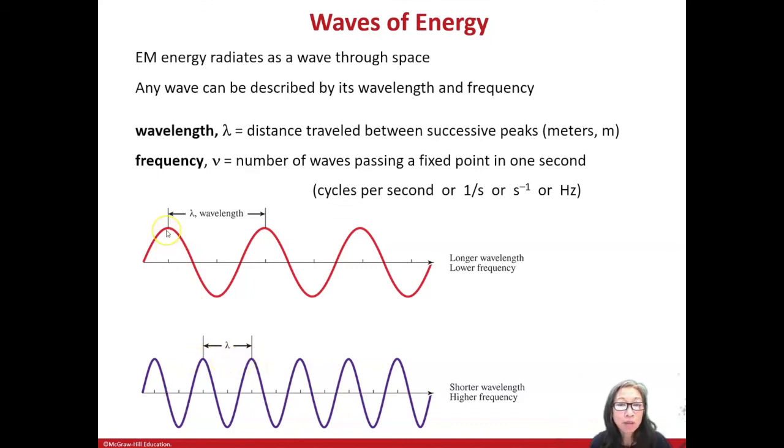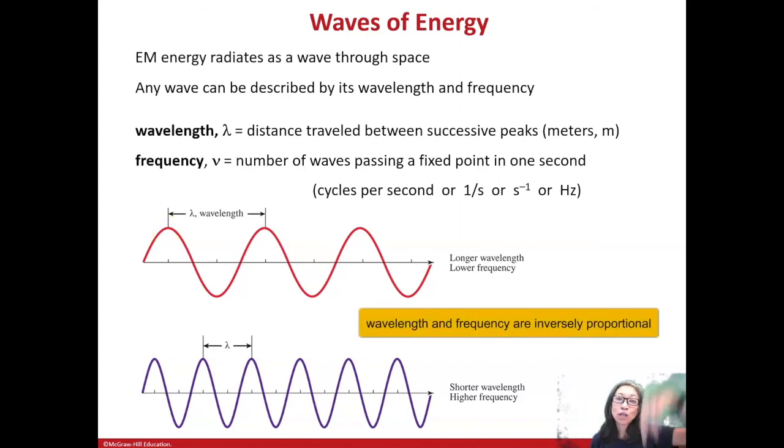Now wavelength and frequency are related. They are inversely proportional. If one is high, the other is low, or if one is low, the other is high. You can see from the red wave, the higher wavelength has less waves passing through this one point in one second. So a high wavelength means a lower frequency.